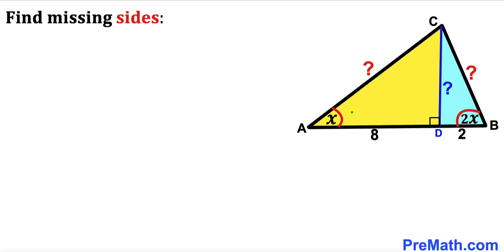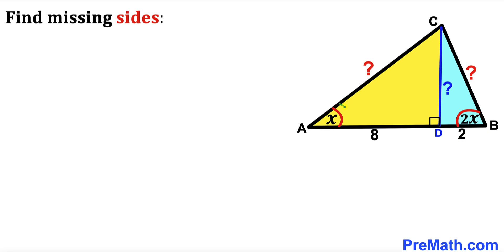Welcome to pre-math. In this video we have triangle ABC along with perpendicular CD, such that segment AD is 8 units and segment BD is 2 units. Angle CAD is x degrees, angle CBD is 2 times x. Our task is to find the missing side lengths: AC, CD, and BC.